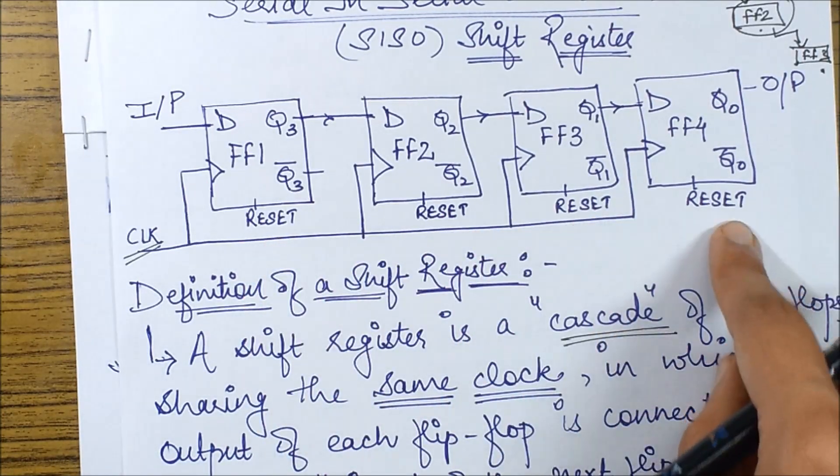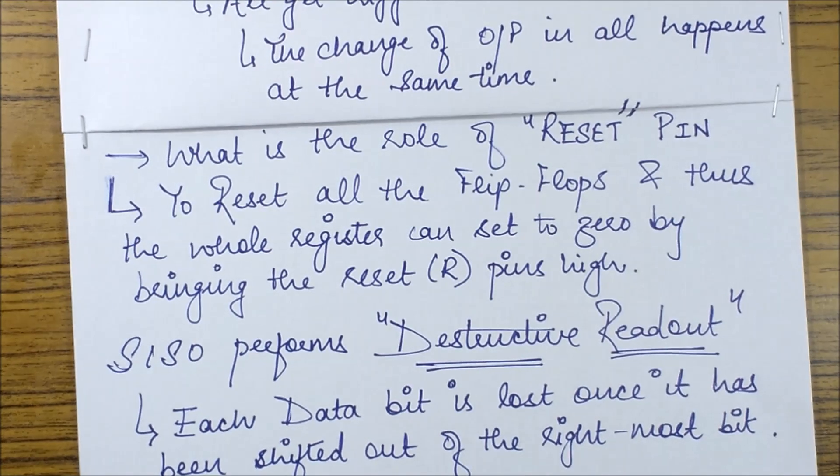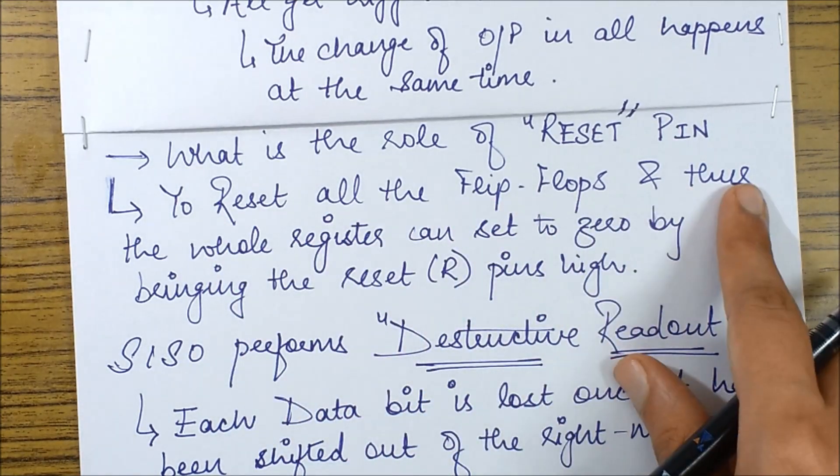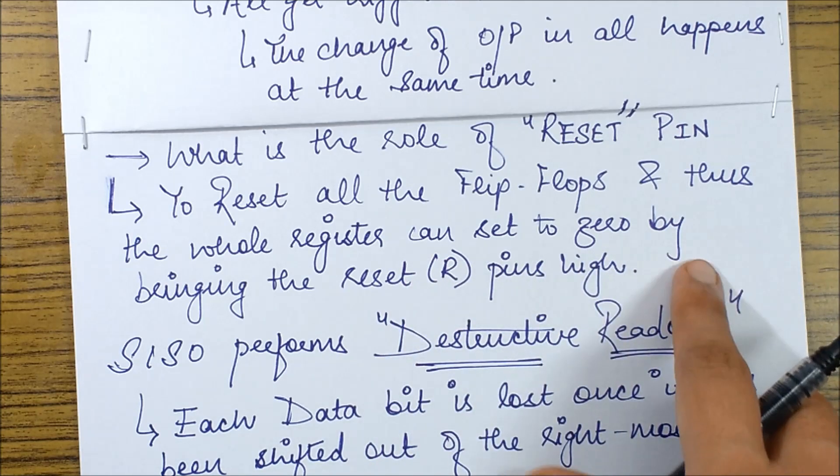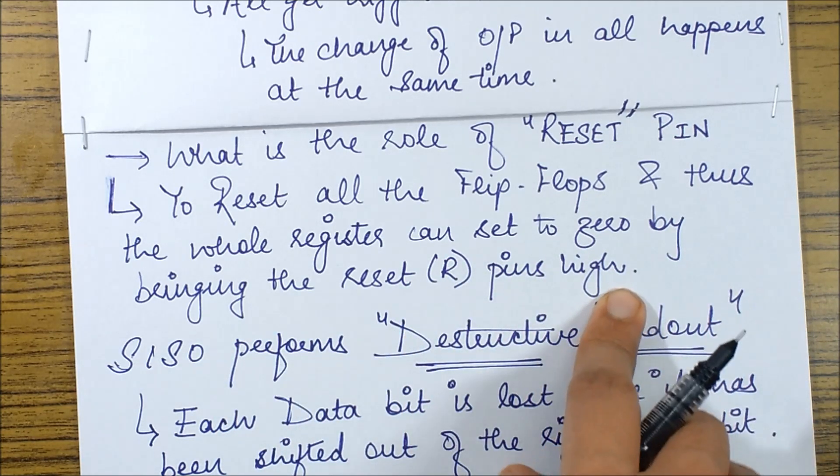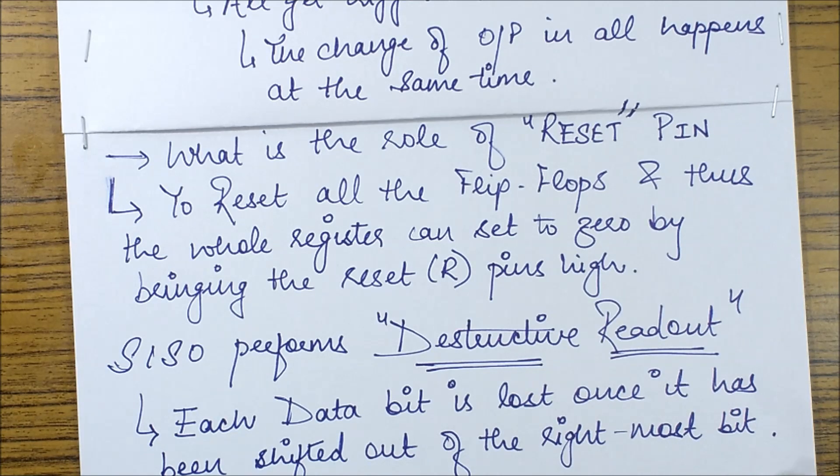And then another thing was there was also a reset pin. So what is the role of this reset pin? The role is to reset all the flip-flops, and thus the whole register can be set to zero by bringing the reset pins high. But that doesn't mean that we cannot set one of the reset pins. We can also set one of the reset pins if required, but that won't mean anything because these reset pins are basically used to reset all the flip-flops. But essentially if you need one of the, because resetting all the flip-flops would mean that I am just clearing the contents of the register, but in case you require the resetting of individual flip-flops that can also be performed.